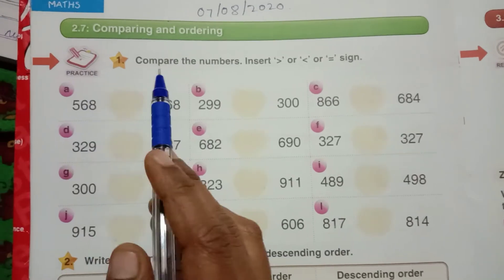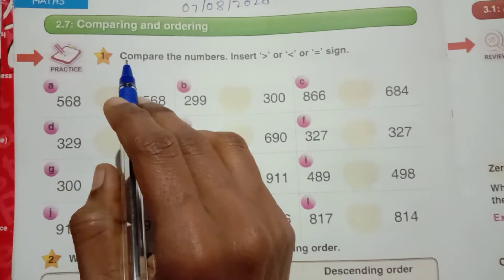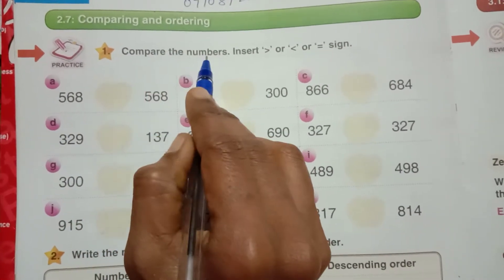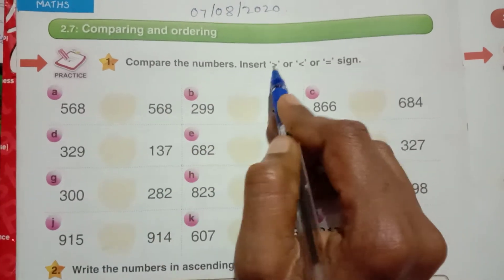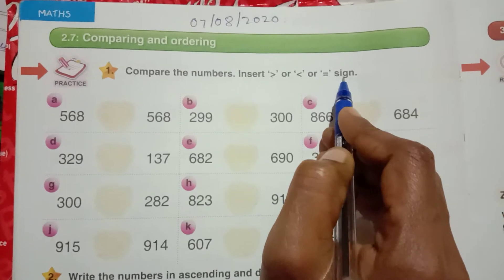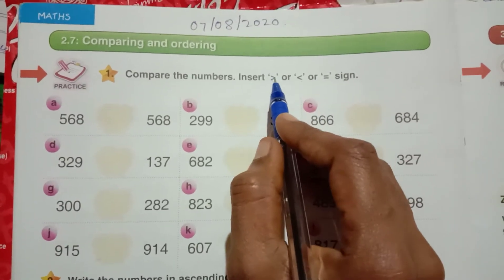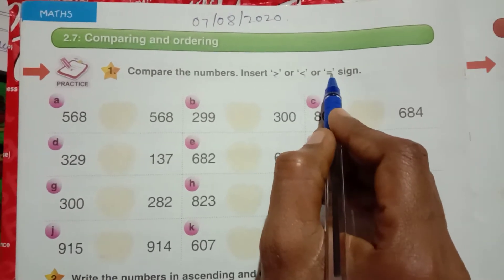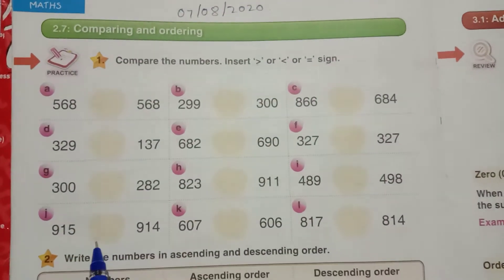Take your textbook and open page number 92. See the textbook here, compare the numbers, insert greater than or less than or equal sign. What they have told here, insert the sign greater than, less than, or equal in the given spaces.